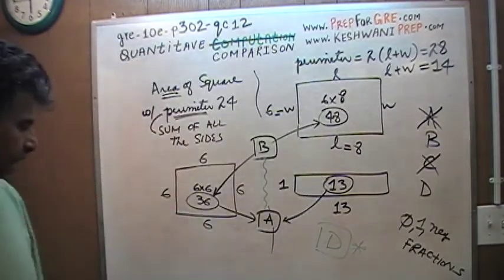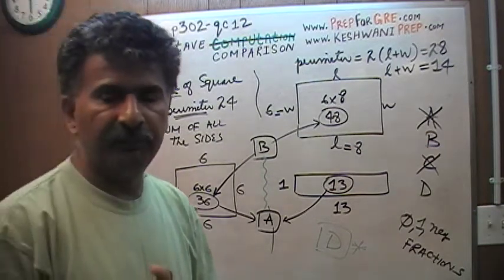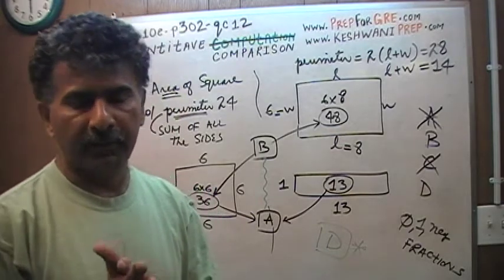That's all. The correct answer is D. It cannot be determined. It depends on the dimensions of the two sides of the rectangle.